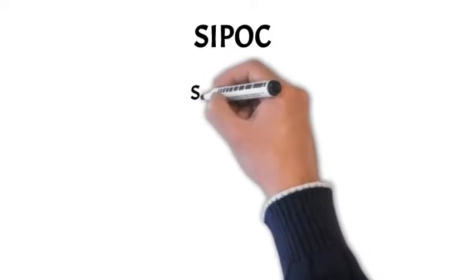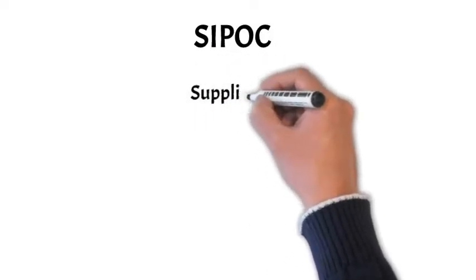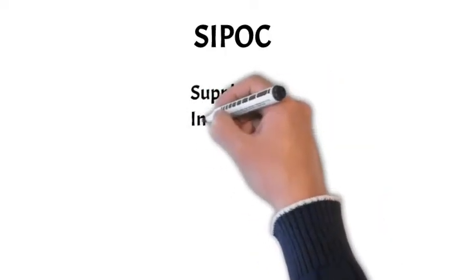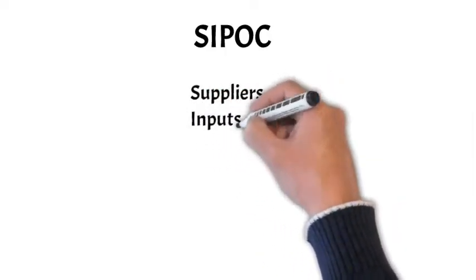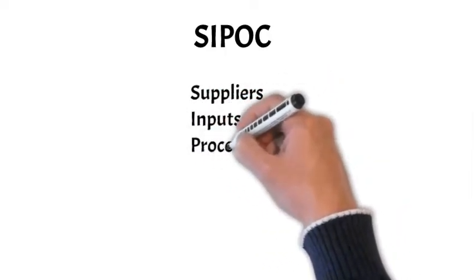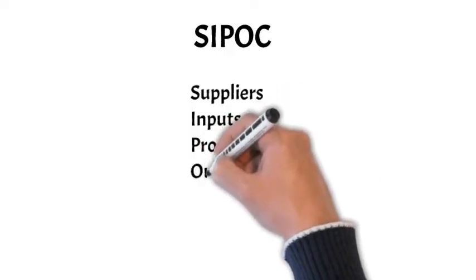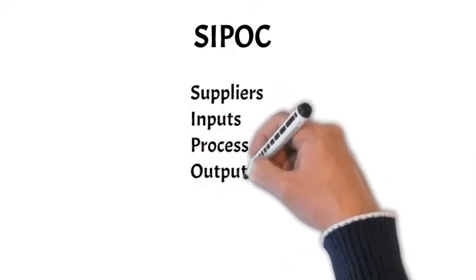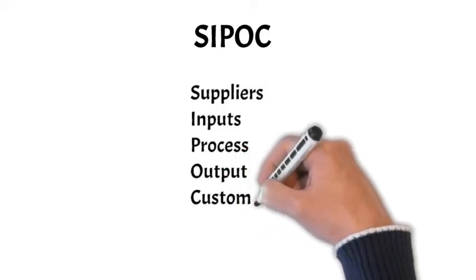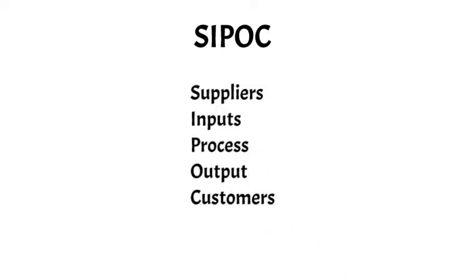To better understand a process, Lean Six Sigma professionals begin with a SIPOC diagram. SIPOC is shorthand for suppliers, inputs, process, outputs, and customers. It is a diagram that identifies all the suppliers, inputs, process steps, outputs, and customers. By undertaking this analysis, they are assured of a better understanding of the process from its beginning to its end.